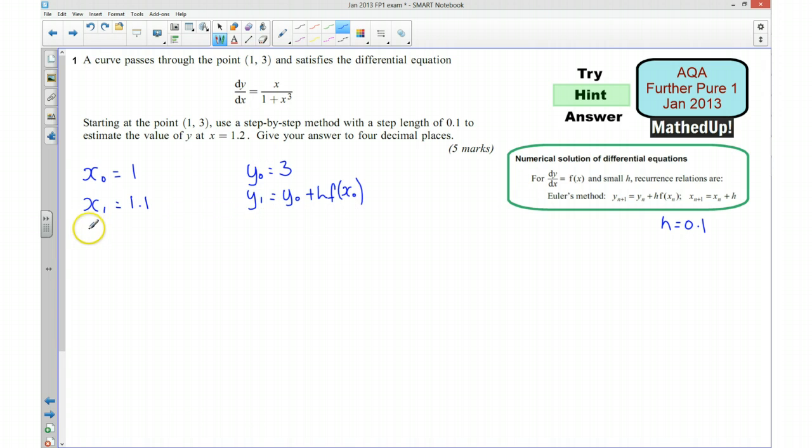Okay, and then x2 is equal to 1.2, y2 is going to be equal to y1 plus hf x1. And again, I've got that from there.